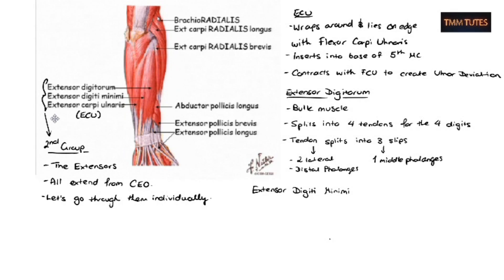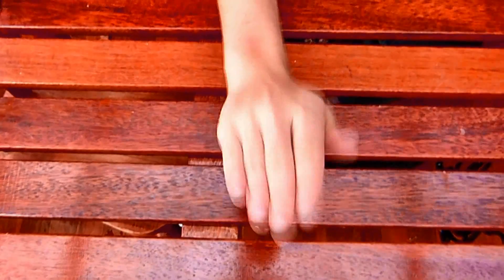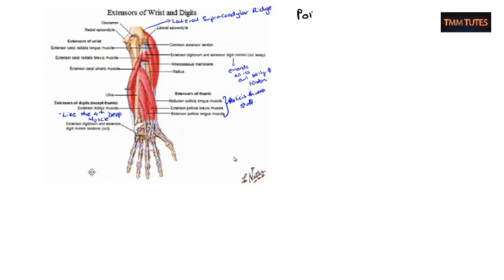So extensor digiti minimi is actually sort of part of extensor digitorum. It's like a little belly that starts and sort of branches off the central belly of the extensor digitorum. And it forms its own little extensor muscle that inserts into the fifth metacarpal, which is the little finger, hence minimi. And it has the same tendon arrangement as extensor digitorum. So that's extension of the wrist. And that's what all those muscles essentially achieve in some way.